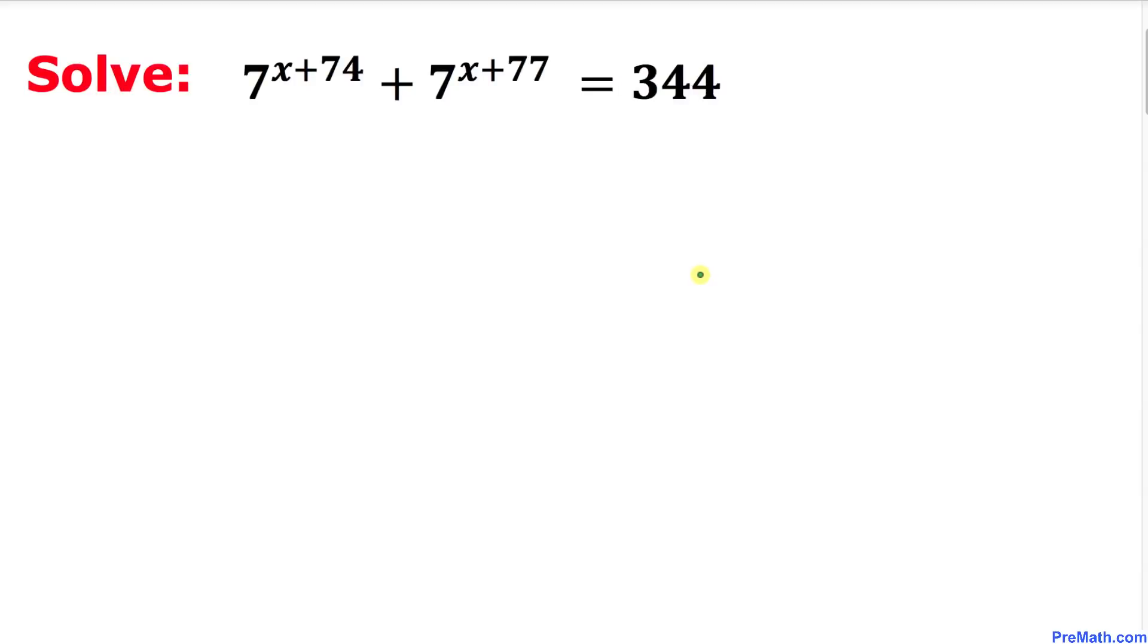Welcome to PreMath. In this video tutorial we are going to solve this given exponential equation. 7 to the power of x plus 74, plus 7 to the power of x plus 77, equals 344. Let's go ahead and get started with the solution. Here I have just copied down our problem right up here.